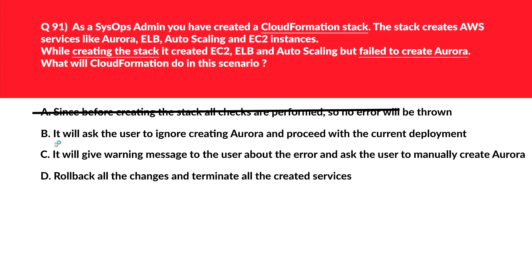Let's move to option B. It says it will ask the user to ignore creating Aurora and proceed with the current deployment. CloudFormation won't ignore anything, because if any AWS service is planned to be created using CloudFormation, it should be getting created. So this is again an incorrect choice.